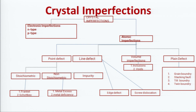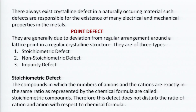As per our syllabus we will focus mainly on point defect, also called the zero-order defect. Line defect is the first-order defect, plane defect is the second-order defect, and volume defect is the third-order defect. Point defect can be further subdivided into three classes: stoichiometric defect, non-stoichiometric defect, and impurity defect. Stoichiometric defects include Frenkel and Schottky defects; non-stoichiometric defects include metal excess and metal deficiency. Line defect divides into edge defect and screw dislocation. Plane defect divides into grain boundary, stacking fault, tilt boundary, and twin boundary. Volume defect includes inclusions and voids.